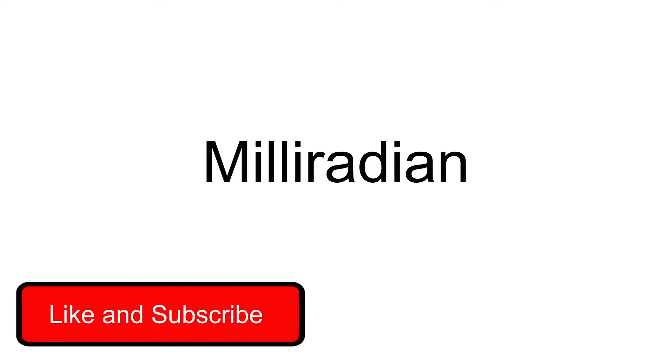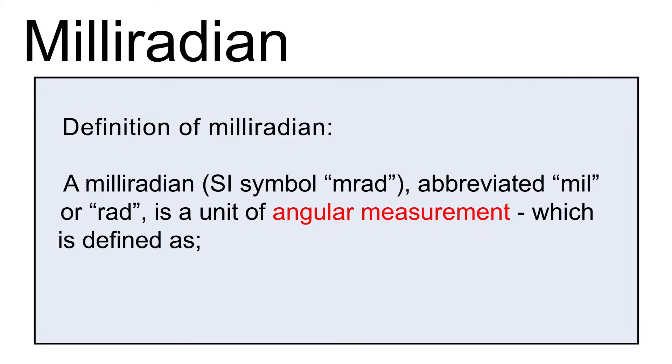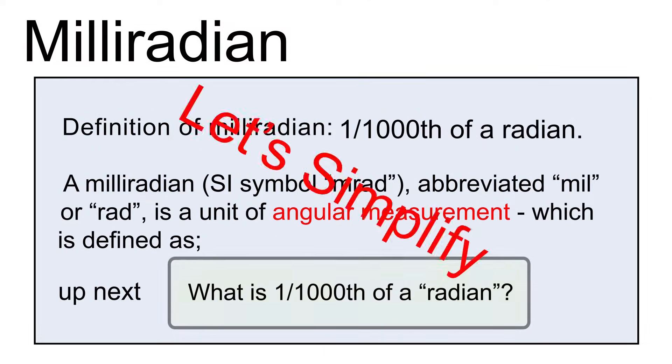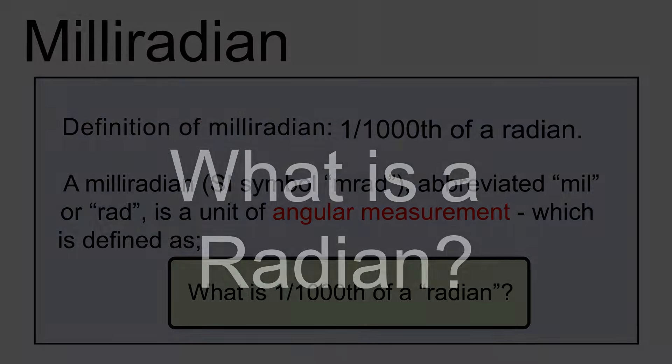The following definition of milliradians from a textbook: the milliradian, abbreviated mil or rad, is a unit of angular measurement which is defined as one thousandth of a radian. Well, let's simplify that.